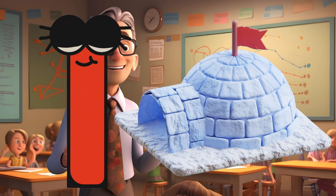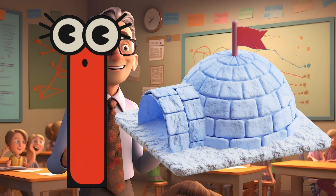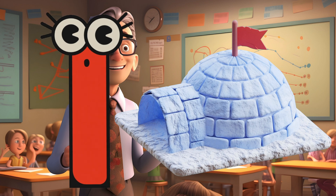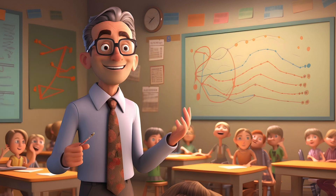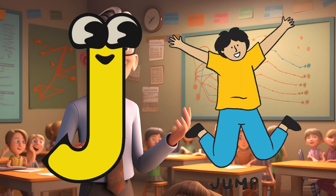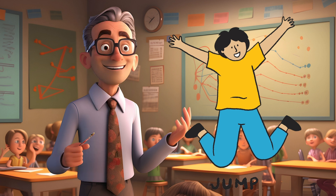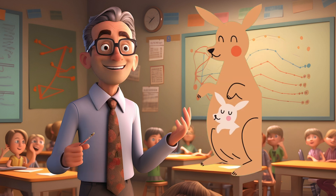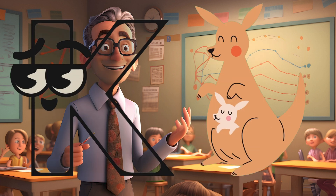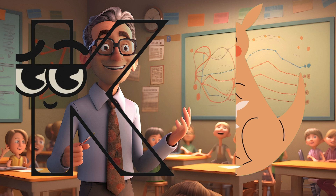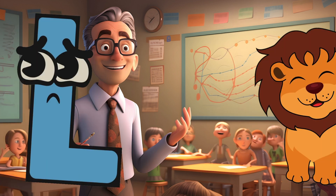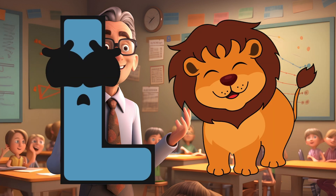I is for Igloo. I-I-Igloo. J is for Jump. J-J-Jump. K is for Kangaroo. K-K-Kangaroo. L is for Lion. L-L-Lion.